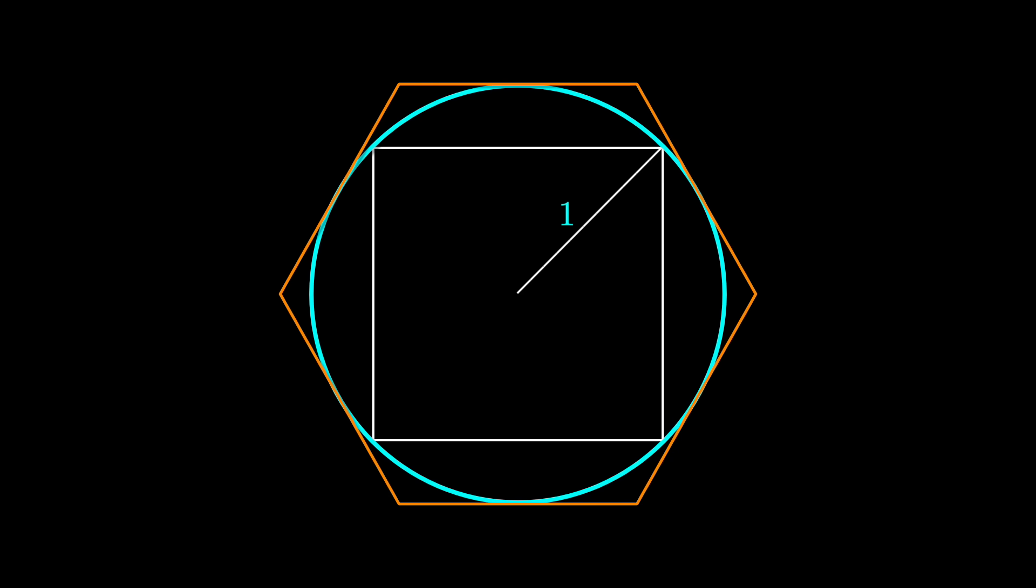We know that the circumference, or the perimeter of the circle, is 2 times pi times r. In this case, the radius r is 1, and so the circumference of this circle is just 2 pi.